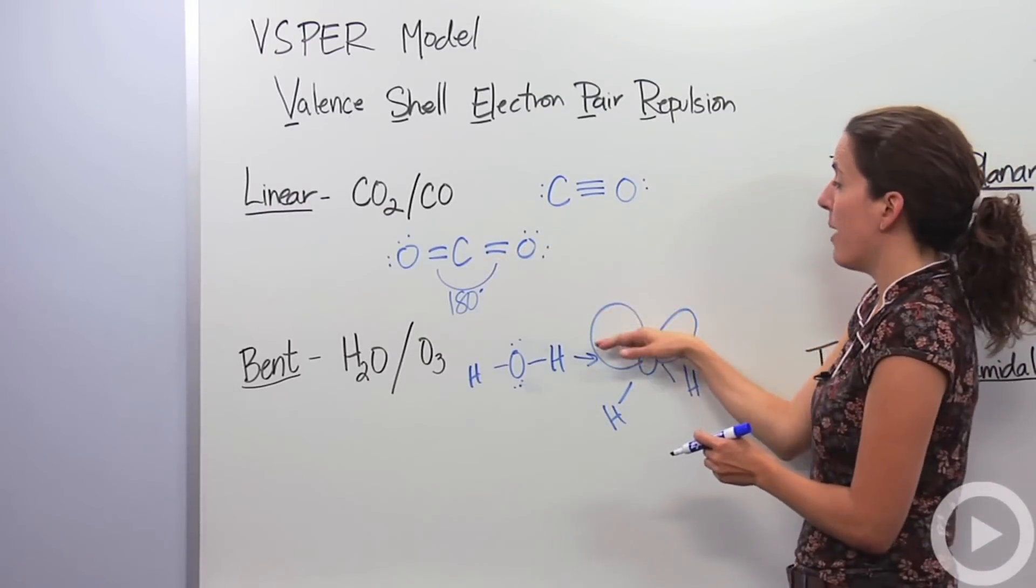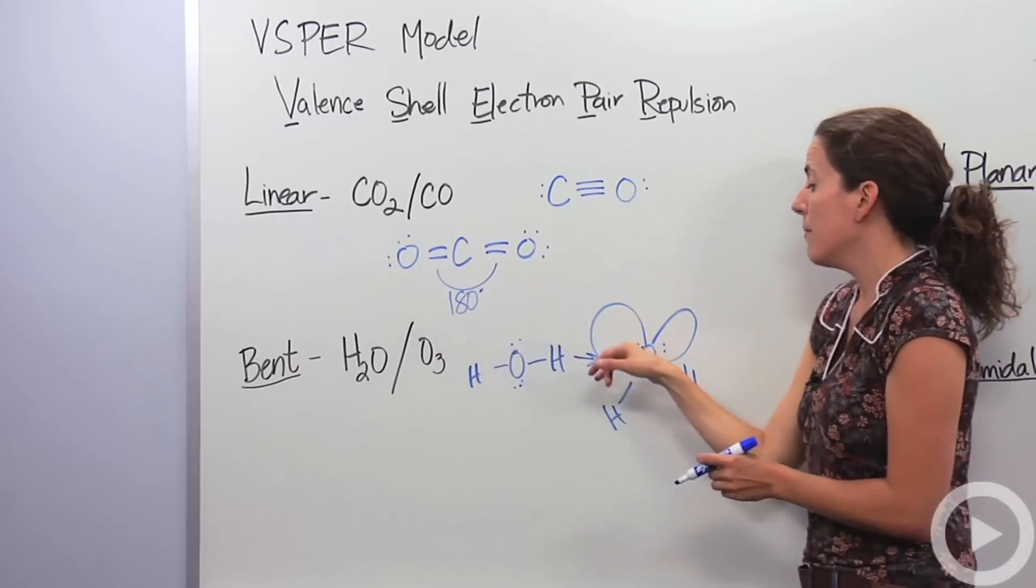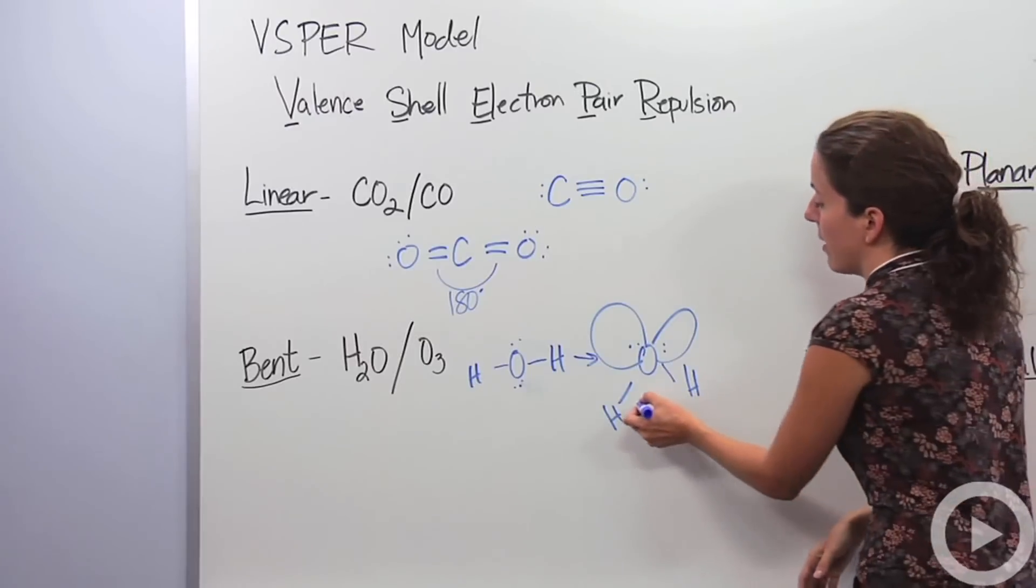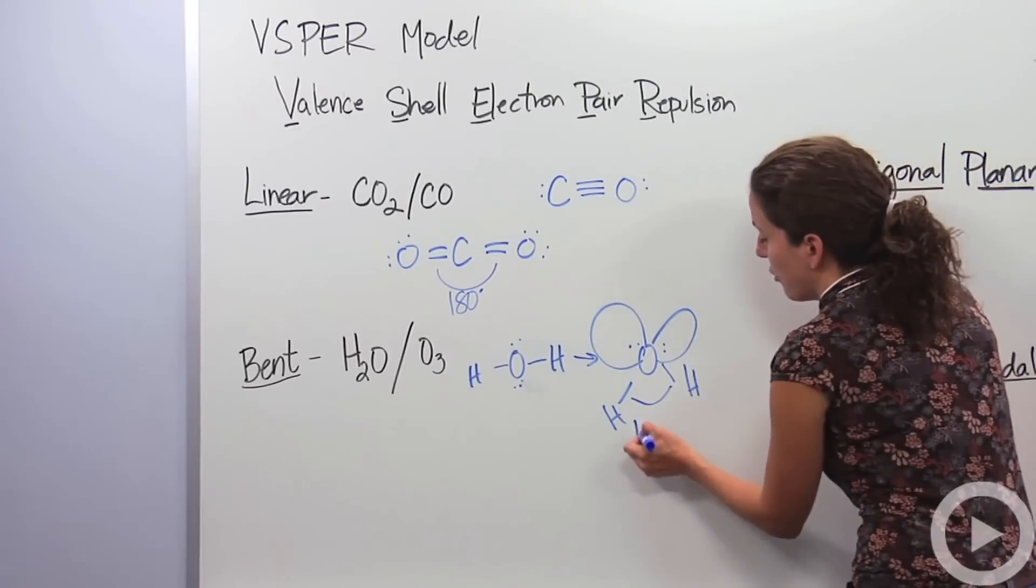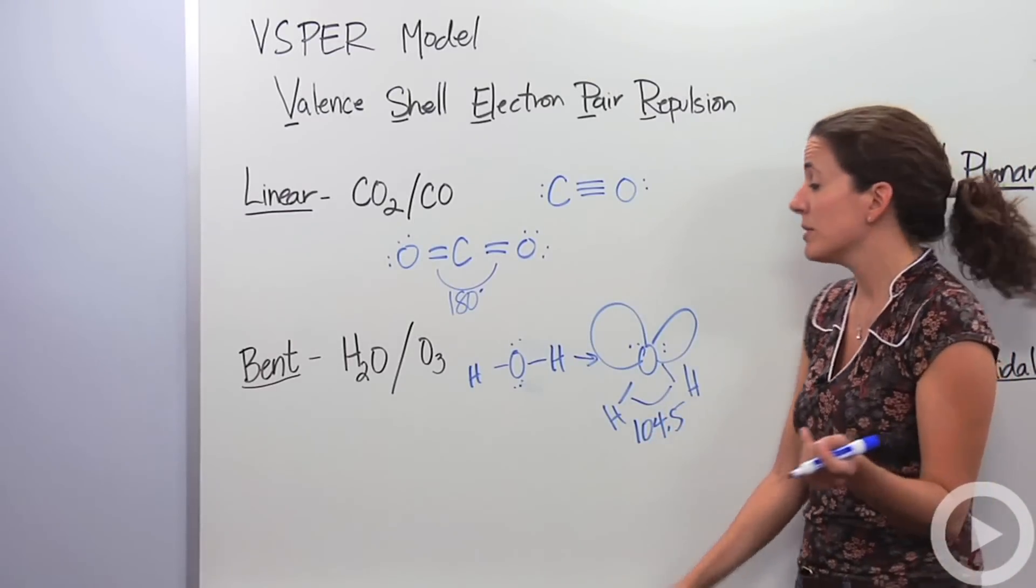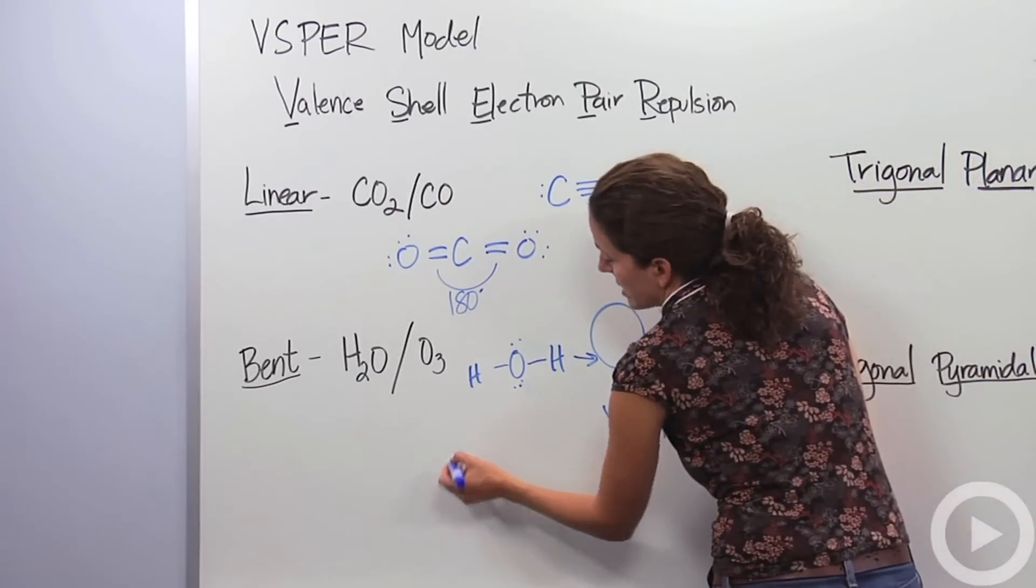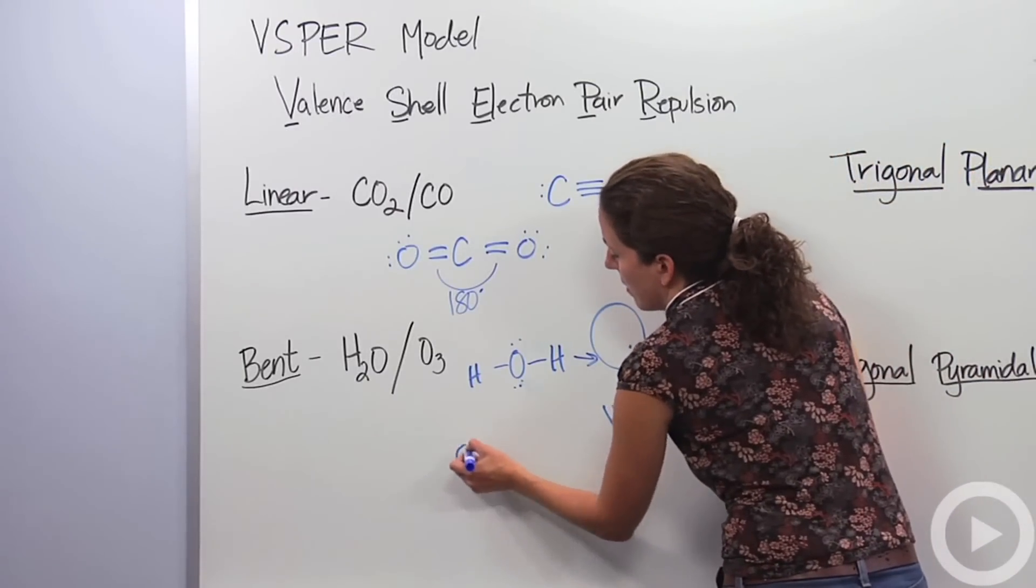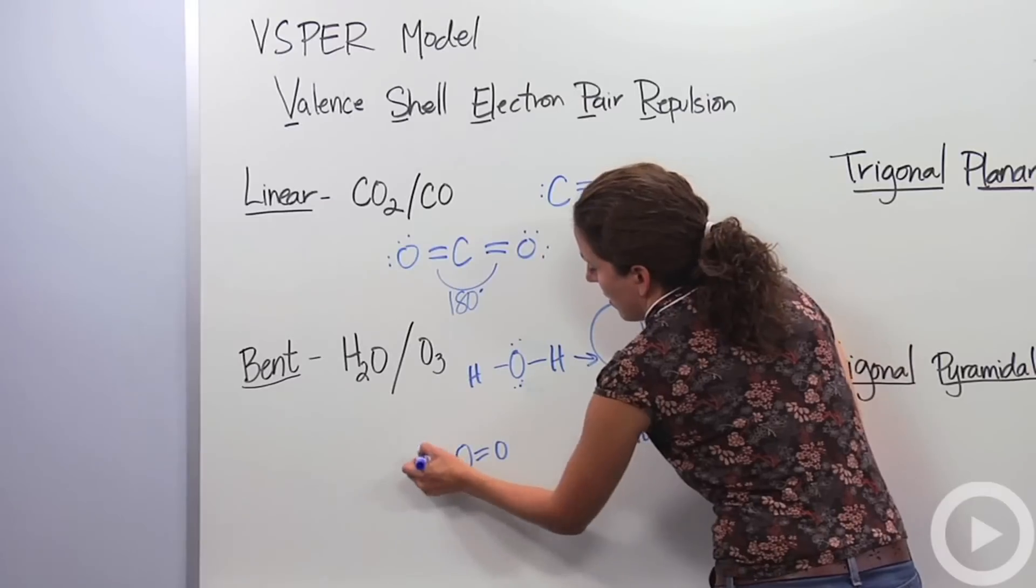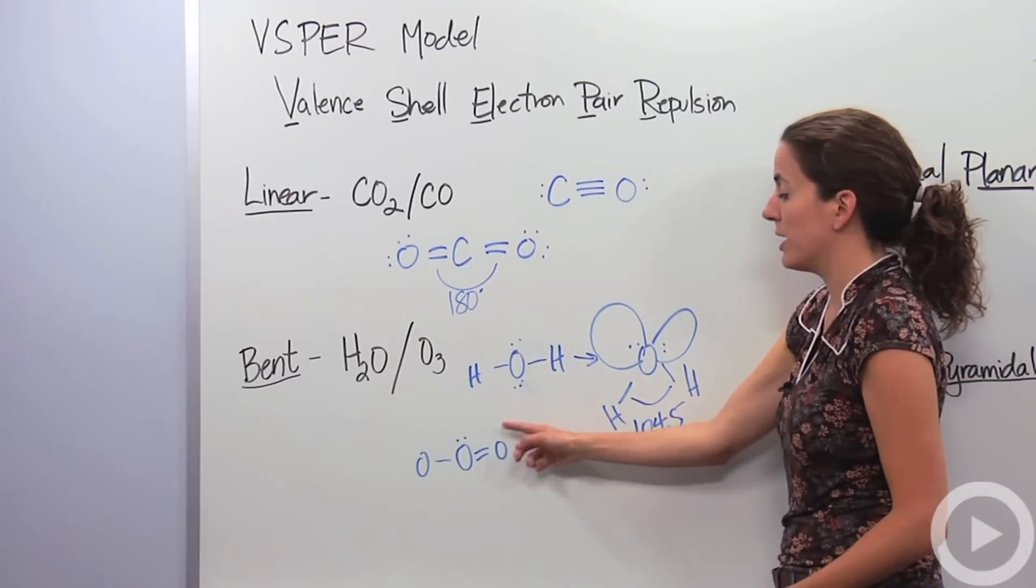The difference between linear and bent are these lone pairs. Notice the linear doesn't have any lone pairs in the central atom. But the bent, however, does, which pushes it down, making it bent. The angle between this is 104.5. Another type of bent molecule you'll see is something like ozone. Ozone is O3. It's a resonated model. I'll just do one of them. Notice the difference between this guy is this has two lone pairs of electrons. This guy only has one.